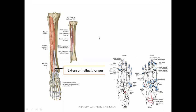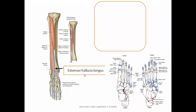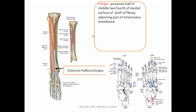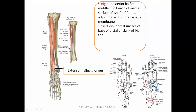Extensor hallucis longus is a muscle lying lateral to tibialis anterior in a slightly deeper plane. It causes extension of the hallux — the big toe. It originates from the posterior half of the middle two-fourths of the medial surface of the shaft of fibula, mainly from the fibula, and also from the interosseous membrane. It is inserted to the dorsal surface of the base of the distal phalanx of the big toe, as seen at the insertion point.